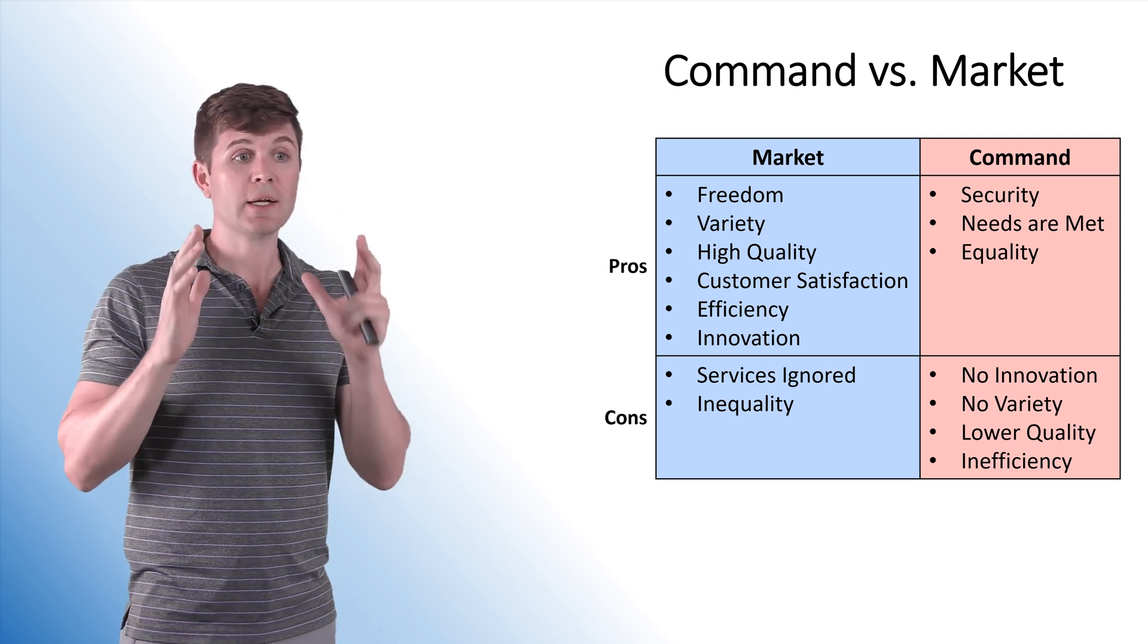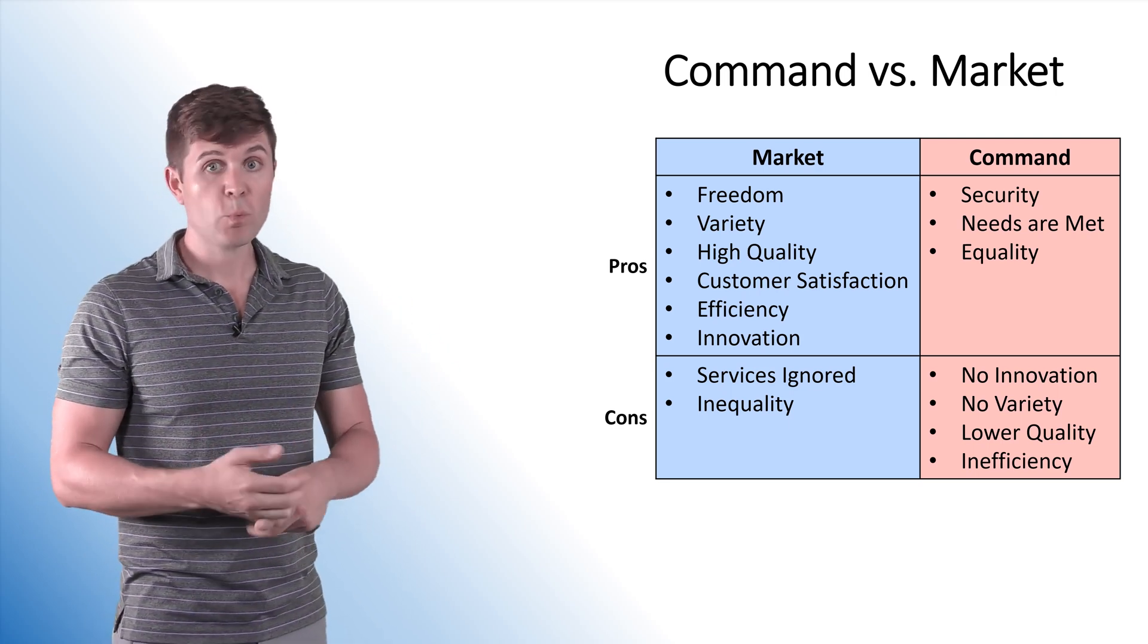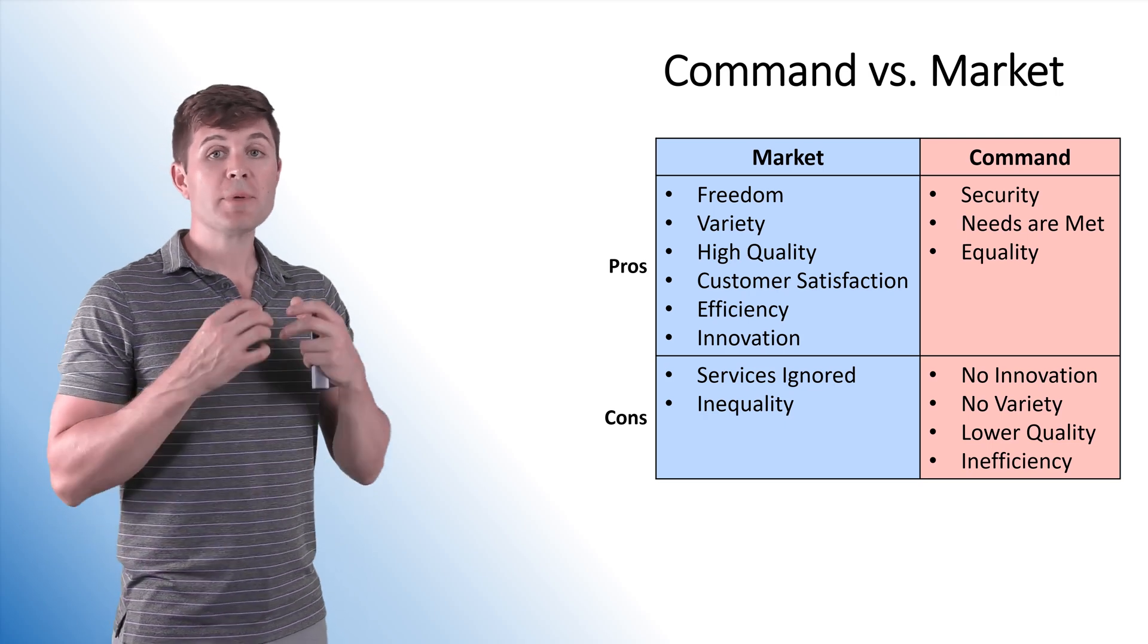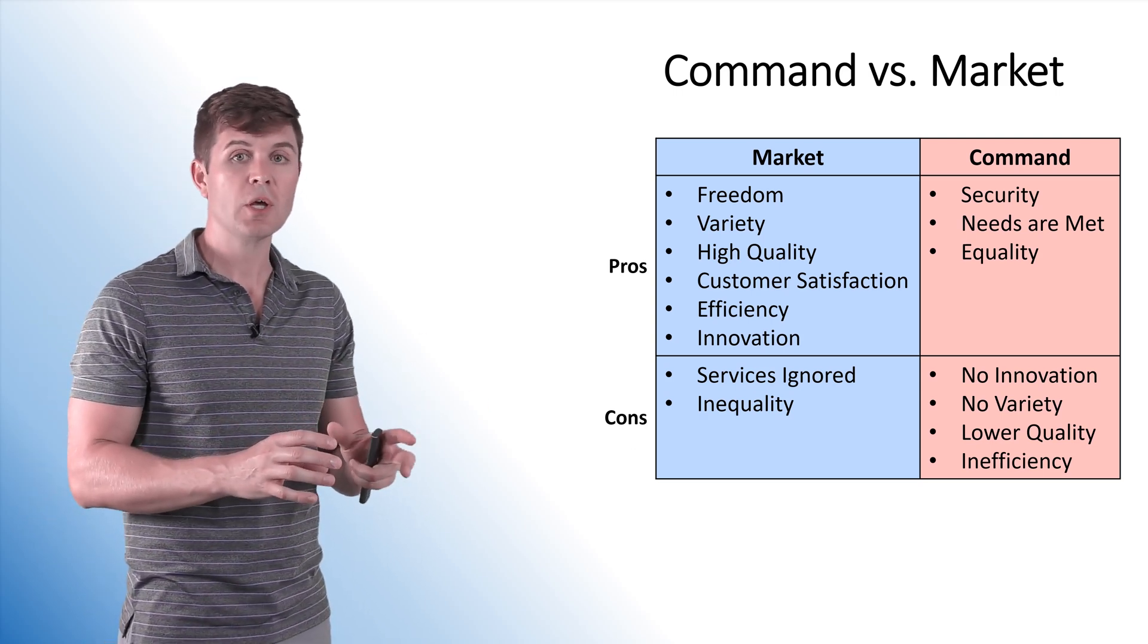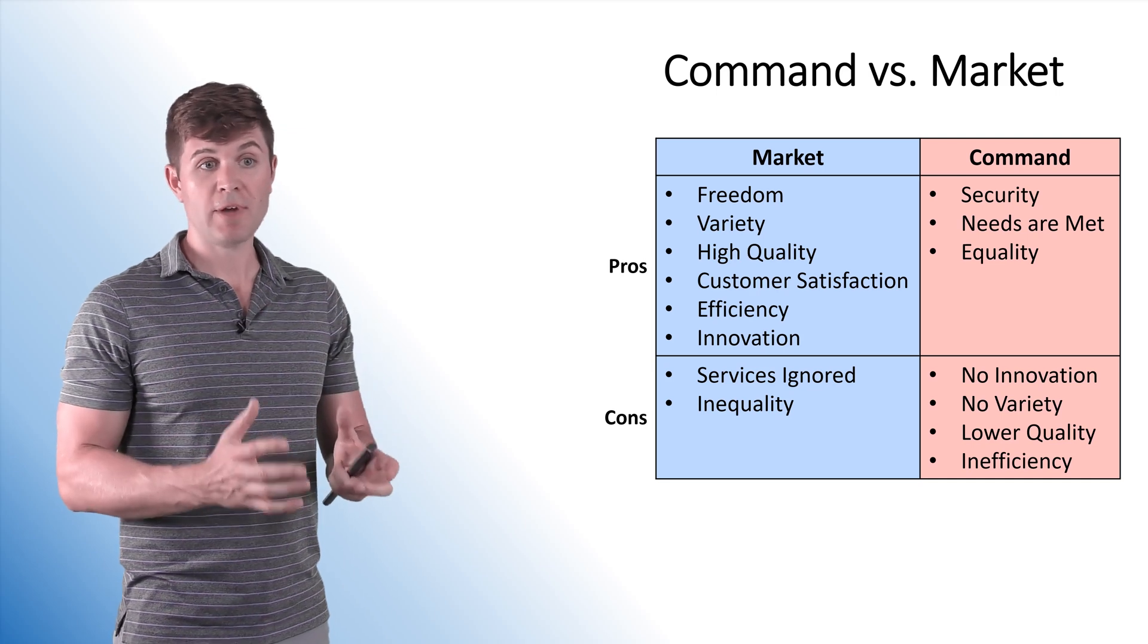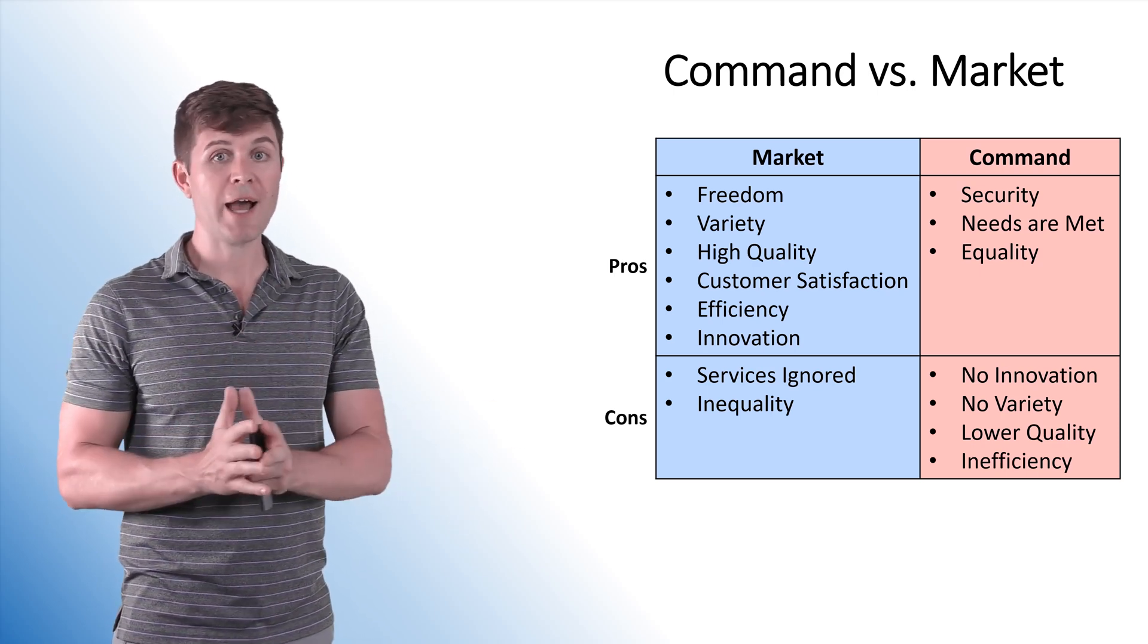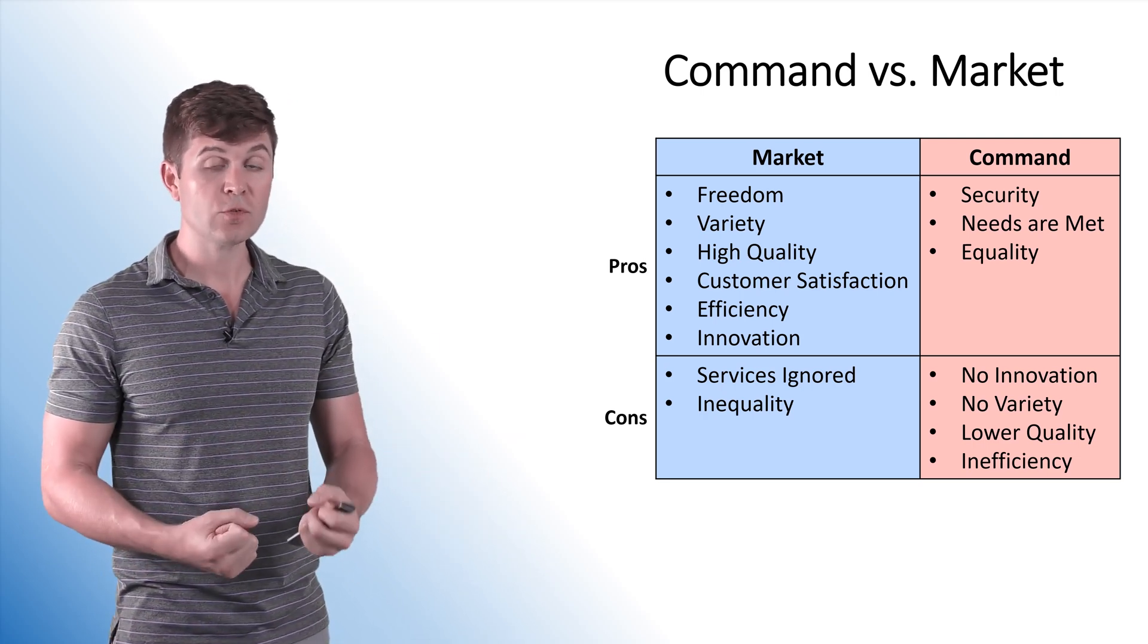All right. Now in a command economy, there are pros and there are cons, just like there are in a market economy. So let's start with the market first. The pros: freedom. We have the freedom to do what we want to. The more market we are, the more freedom we're going to have to get in a business, to get out of business, to start up. There's less regulations. Because of competition, there's a variety of products in existence. And then high quality and high customer satisfaction are also part of that because of that competition. Because of that competition, we also have high efficiency, meaning we're getting more out of our resources. And there's a lot of innovation. Now, the cons of a market economy are some services are ignored. In a pure market economy, education, health care, police protection, all of these things aren't provided by the government and they would need to be provided by the market. So a lot of people would be left out. That's why we are not a pure free market in the United States. We are a mixed economy.